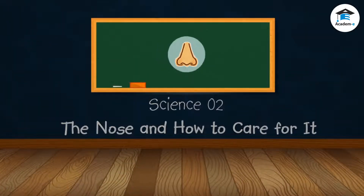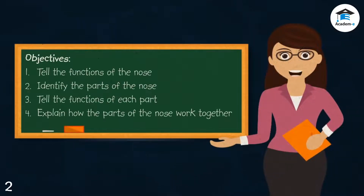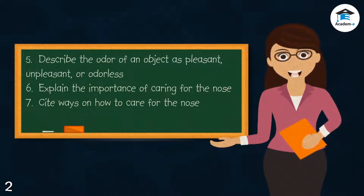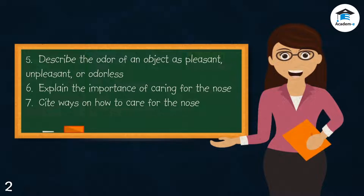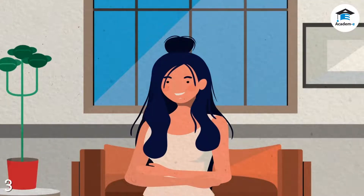The nose and how to care for it. Objectives: at the end of the lesson you should be able to tell the functions of the nose, identify the parts of the nose and tell the functions of each part, explain how the parts of the nose work together, describe the odor of an object as pleasant, unpleasant, or odorless, explain the importance of caring for the nose, and cite ways on how to care for the nose.